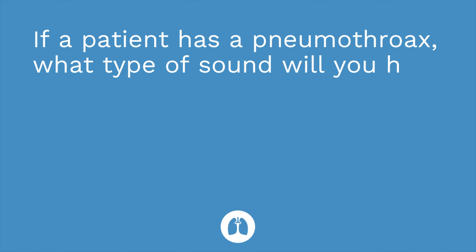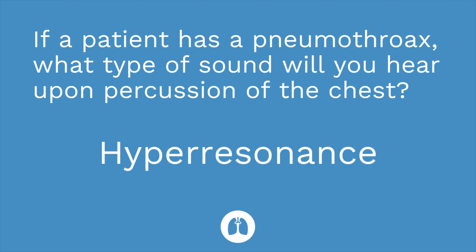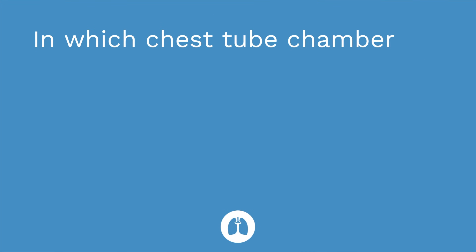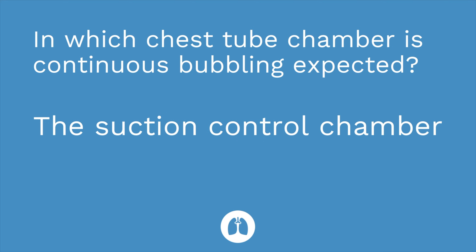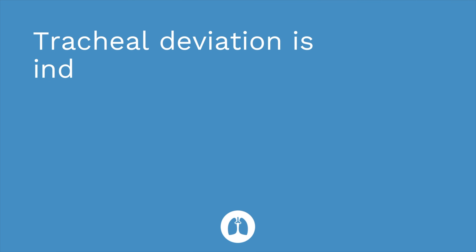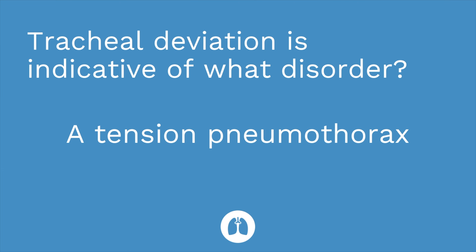It's time for a quiz. Question one: if a patient has a pneumothorax, what type of sound will you hear upon percussion of the chest? The answer is hyperresonance. Question two: in which chest tube chamber is continuous bubbling expected? The answer is the suction control chamber. Question three: tracheal deviation is indicative of what disorder? The answer is a tension pneumothorax. If you didn't do well, go back and watch the video again and review the flashcards — you got this!